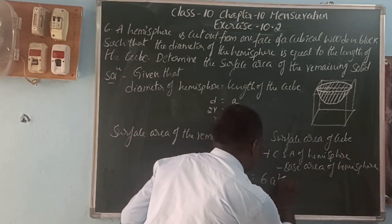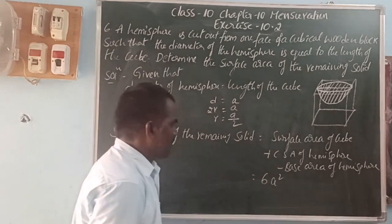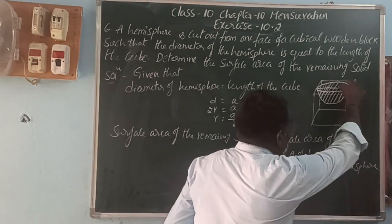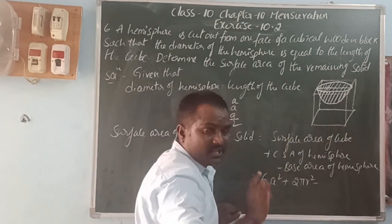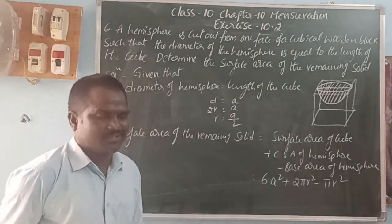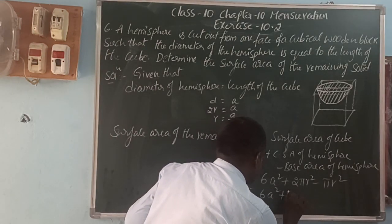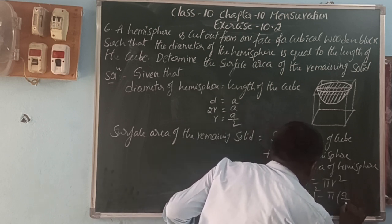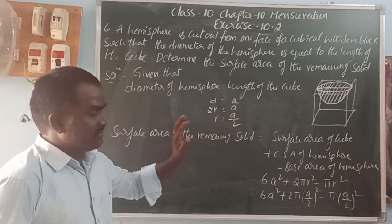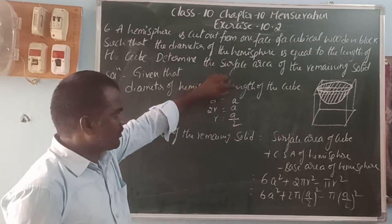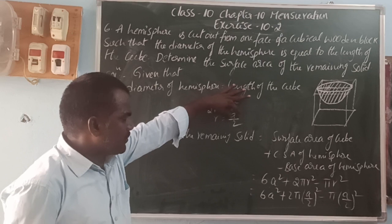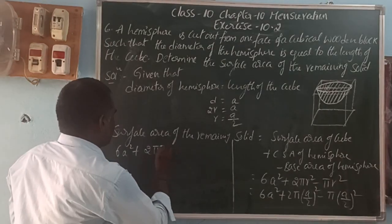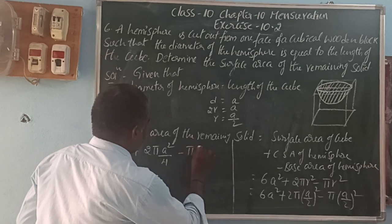Surface area of the cube is 6a². Curved surface area of the hemisphere is 2πr². Base area of the hemisphere (a circle) is πr². Substituting r = a/2: we get 6a² + 2π(a/2)² − π(a/2)², which equals 6a² + 2π(a²/4) − π(a²/4).